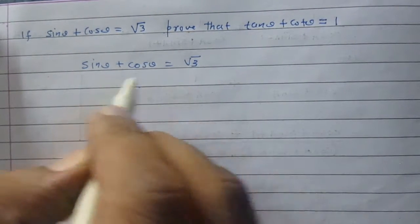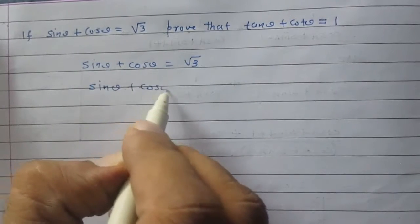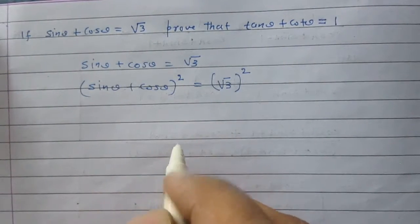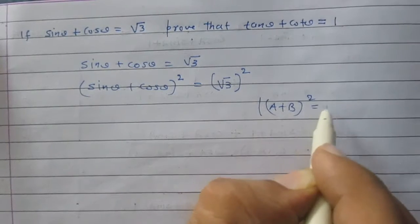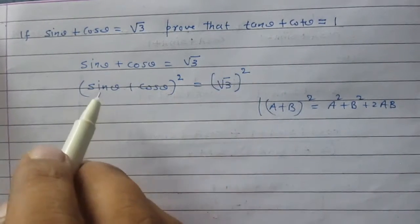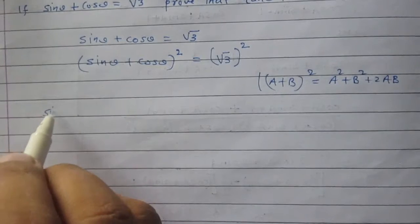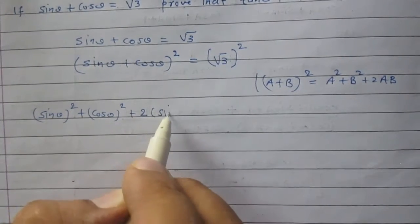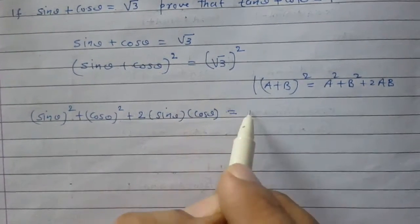We can square both sides of this equation. Squaring both sides, we will get (sin theta plus cos theta) whole square is equal to the square of square root 3. Here we can apply the identity (a + b)² = a² + b² + 2ab, where a stands for sin theta and b stands for cos theta. After applying this identity, we will get sin²theta plus cos²theta plus 2 sin theta cos theta is equal to 3.